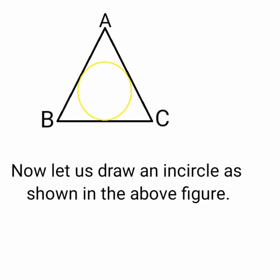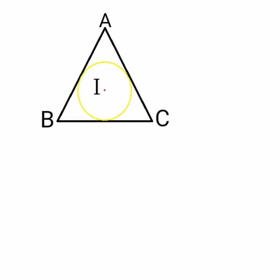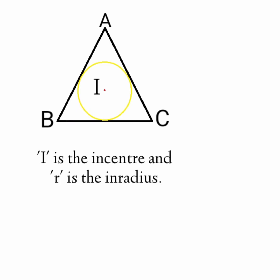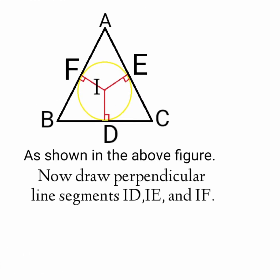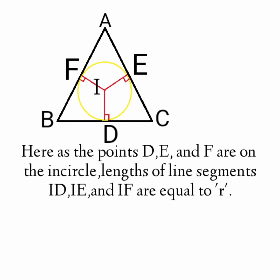Now let us draw an incircle as shown in the above figure. Then I is the incenter and small r is the inradius. As shown in the above figure, draw perpendicular line segments ID, IE, and IF to the sides BC, AC, and AB respectively. Here, as the points D, E, and F are on the incircle, the lengths of line segments ID, IE, and IF are equal to r, as the length of the line segment joining the center and a point on the circle equals its radius.